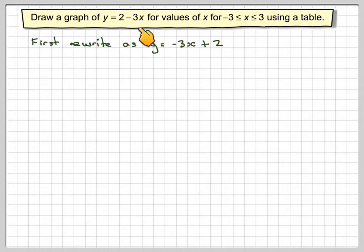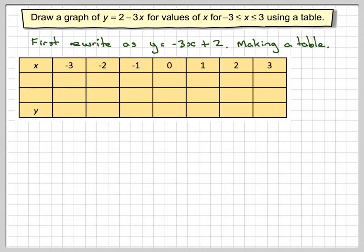The first thing you need to do is interchange these two values here. You should rewrite it as minus 3x plus 2, and that will help you greatly when you do the table. So, making a table, I've got my values of x starting at minus 3. I'm going to take integer values: minus 3, minus 2, minus 1, 0, etc., up to 3.